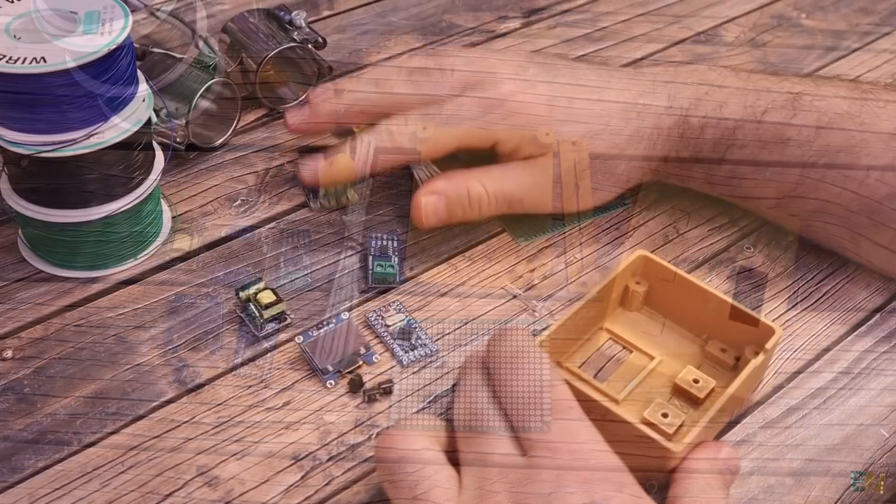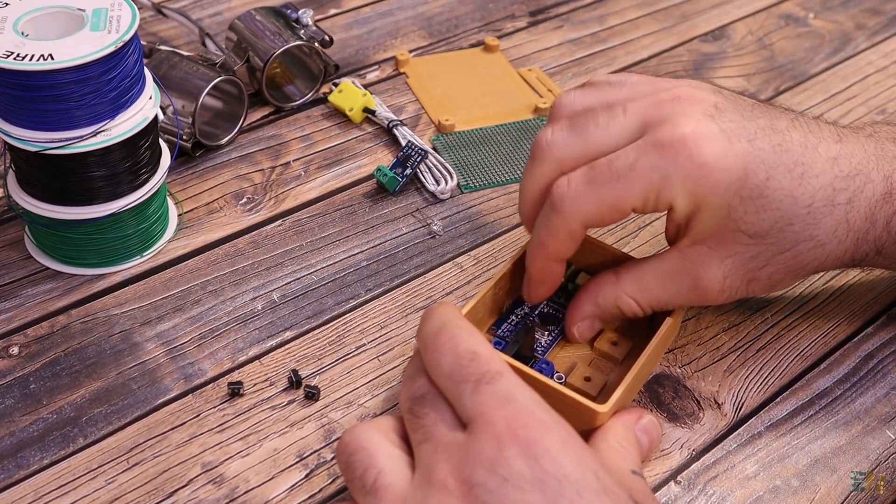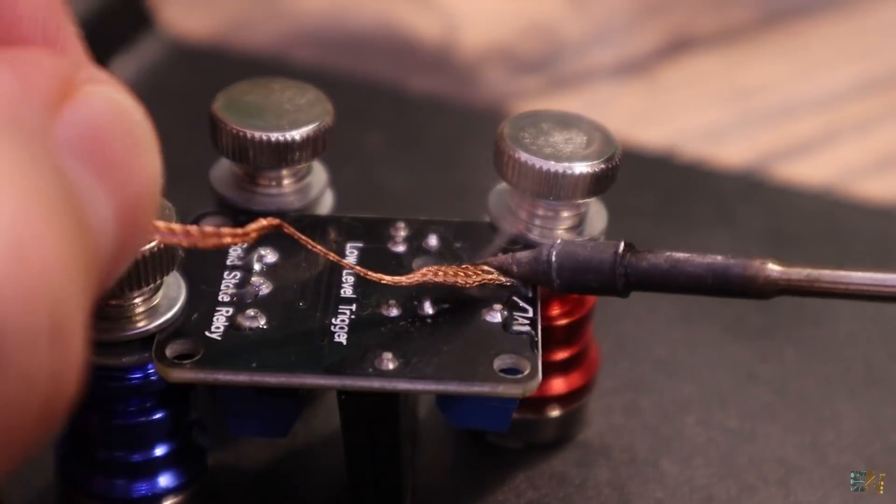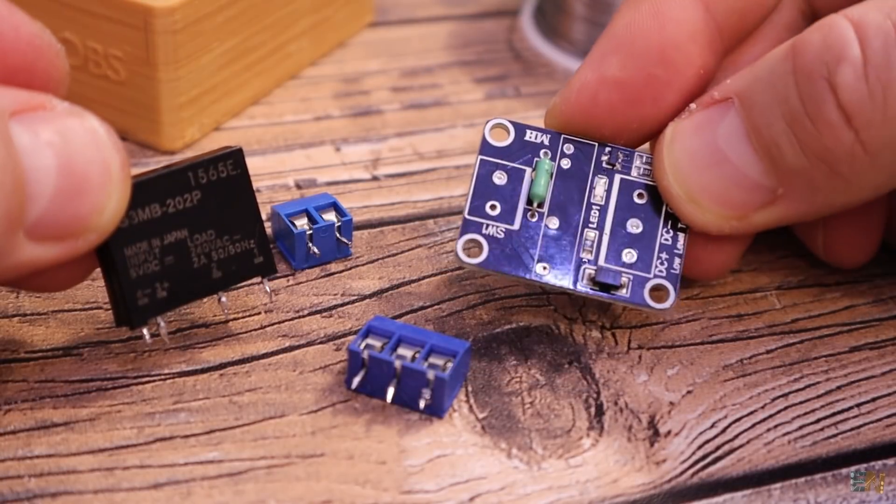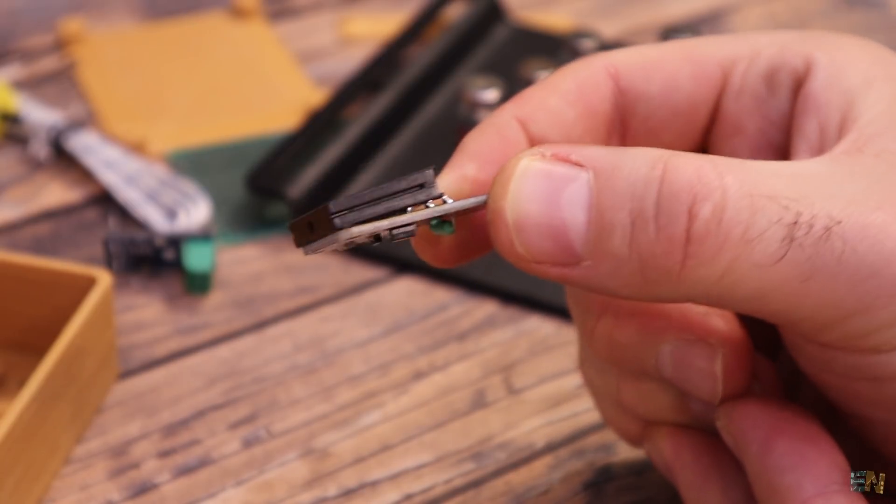I first decide where to place each component and also check if everything will fit inside my case. The solid state relay is quite tall so what I've done was to remove the screw terminals and the relay and then I've soldered it back but flat on the PCB. In this way it will be smaller and fit better inside the case.